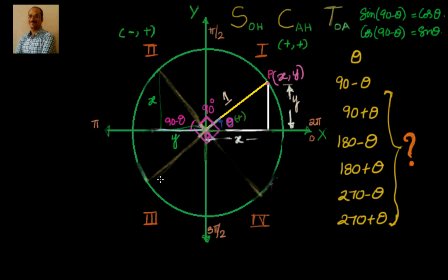Now let's extend the line so that it touches on the other side, making it a diameter. You can see that this angle is theta, this is 90 degrees, and this is another 90 degrees. That means this total angle is equal to 180 plus theta.